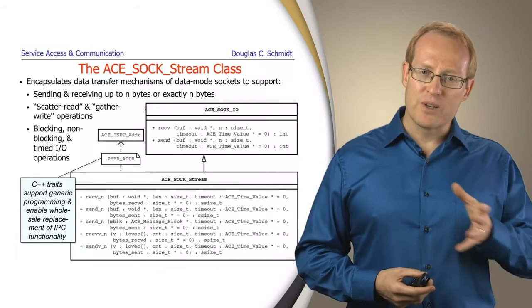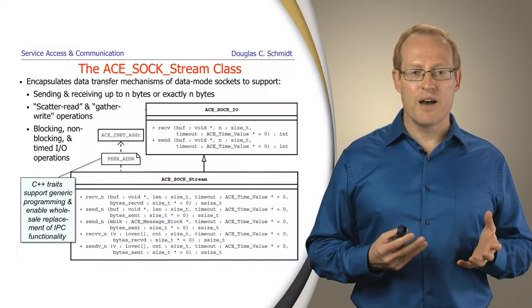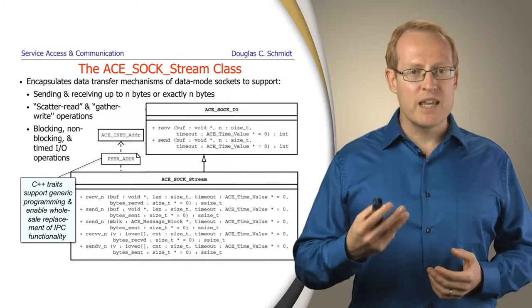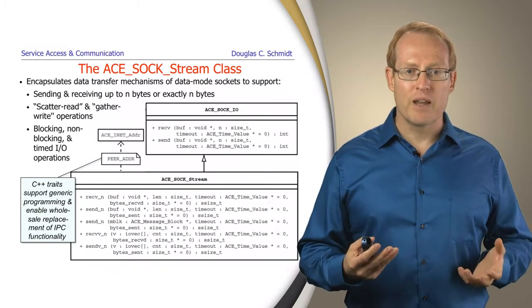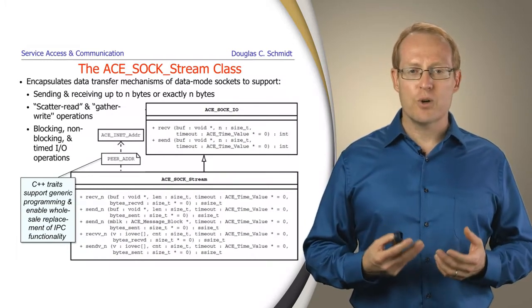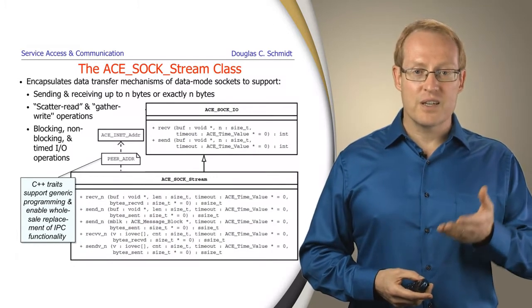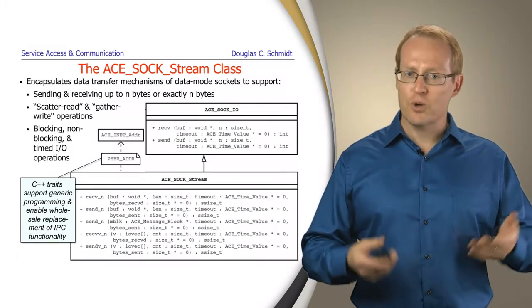Another capability you'll see throughout all the different wrappers in ACE is the concept of C++ traits, which makes it much easier to provide generic programming, providing generic algorithms and generic containers, and using the traits in interesting ways. In this particular case you see this ACE_SOCK_Stream has something called a peer_addr, which is a trait.